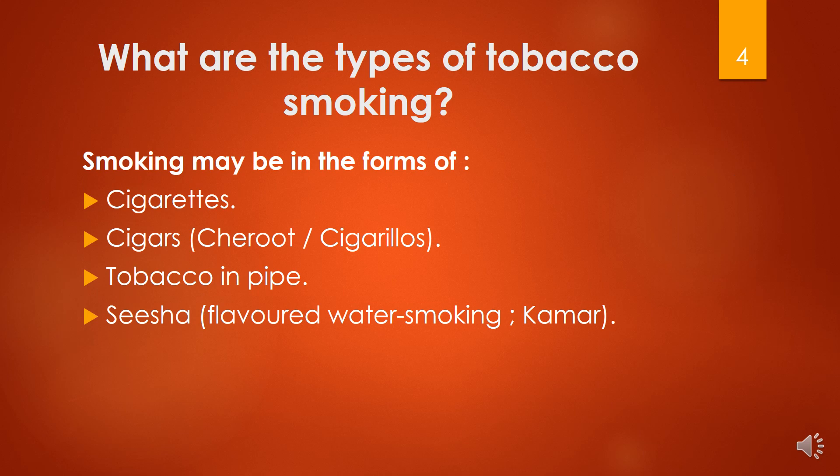What are the types of tobacco smoking? Smoking may be in the form of cigarette, cigars, tobacco in pipe, shisha that is flavored water smoking, and kamar. And nowadays vaping.